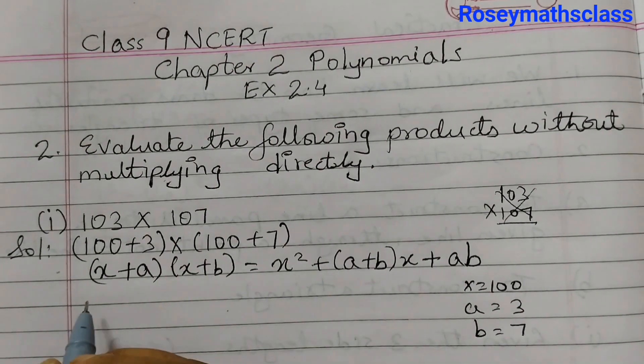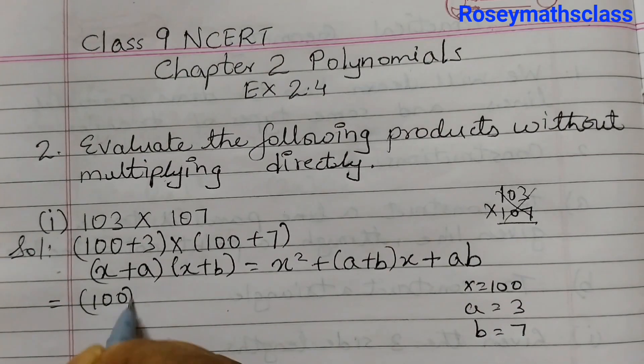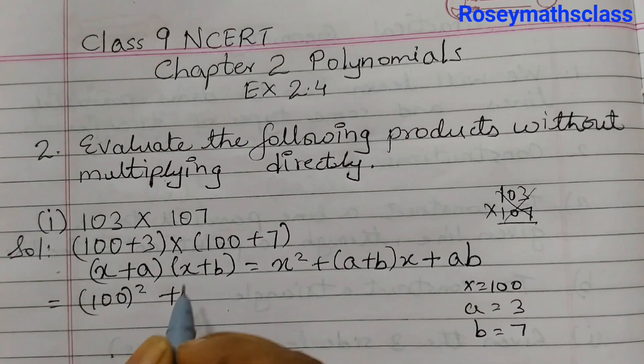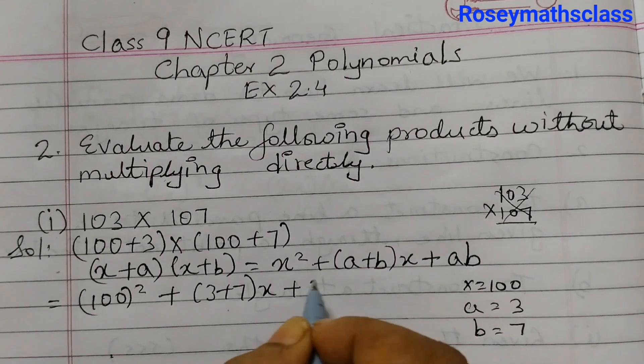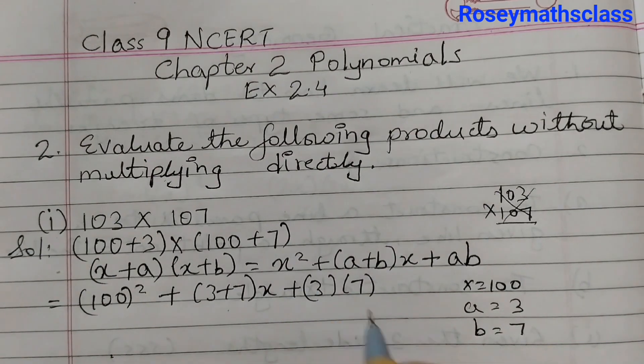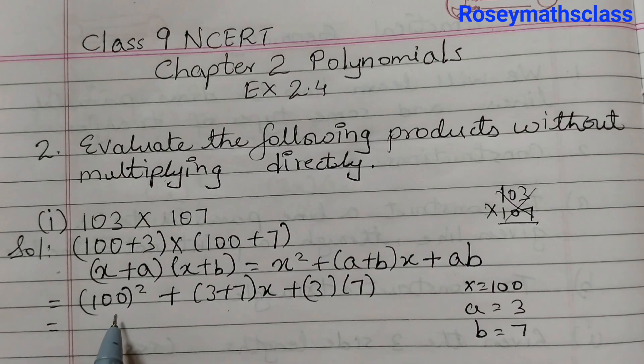Now we will substitute that, so that will be equal to 100² + (3+7) into x + (3×7). Equals to 100 into 100, so that will be 4 zeros.